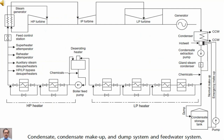This diagram shows the condensate makeup and dump system and feed water system. In this diagram you can see the boiler feed pump and its corresponding recirculation line. You can also see the condensate extraction pump and its associated recirculation line.